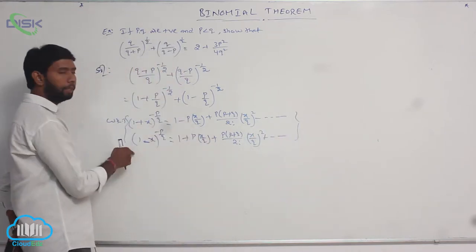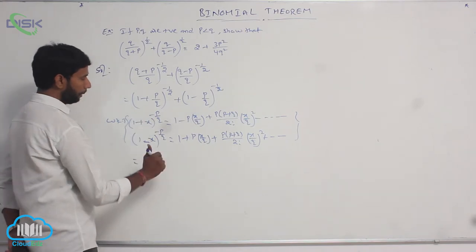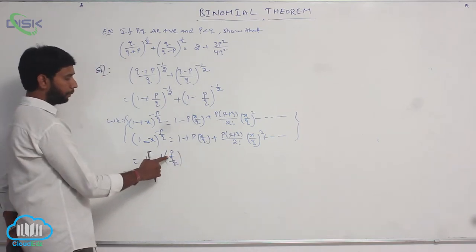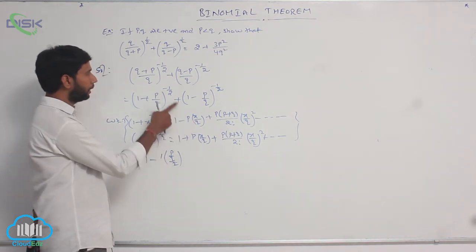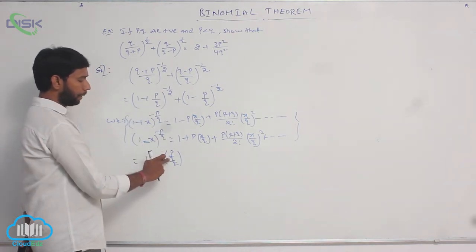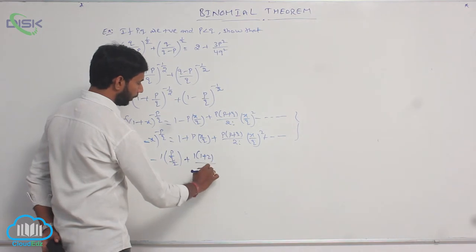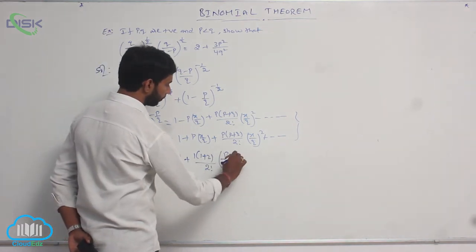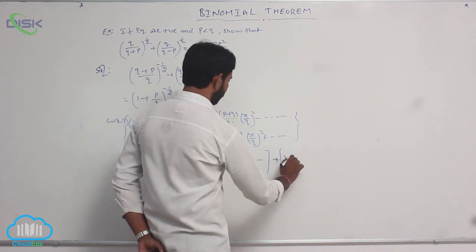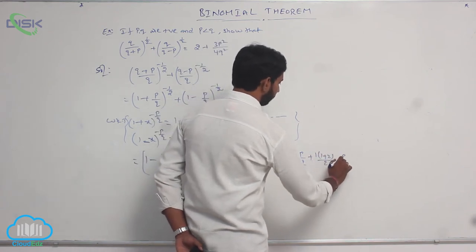Apply these two formulas with P equal to 1, Q equal to 2, and X equal to P/Q. Substituting: 1 minus 1 times (P/Q) plus 1 times (1 plus 2) over 2 factorial times (P/2Q) squared minus and so on, plus 1 plus (P/2Q) plus 1 times (1 plus 2) over 2 factorial times (P/2Q) squared.